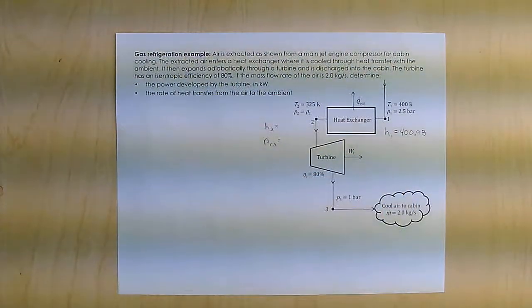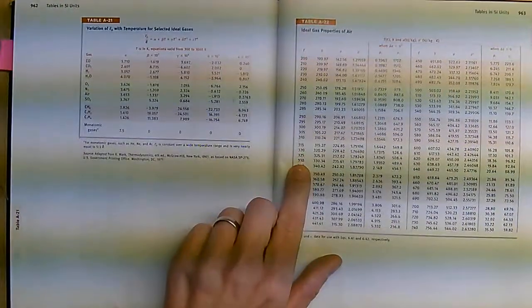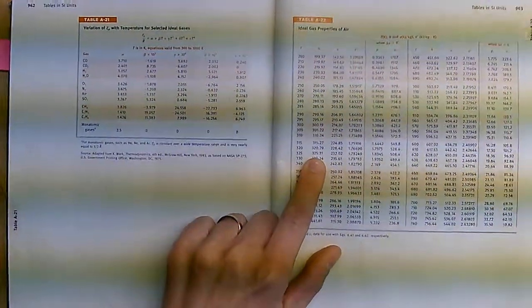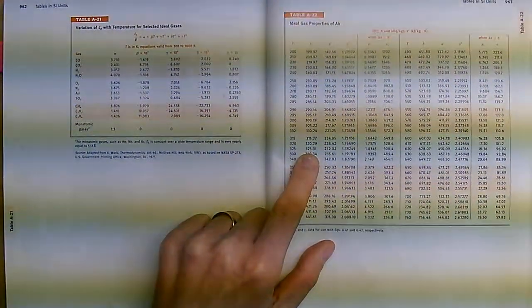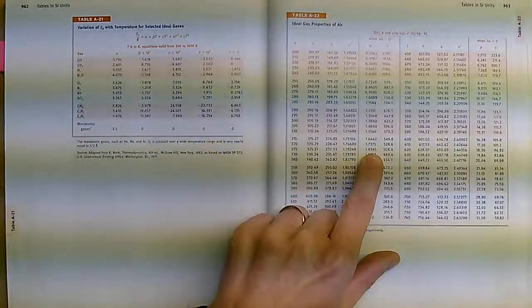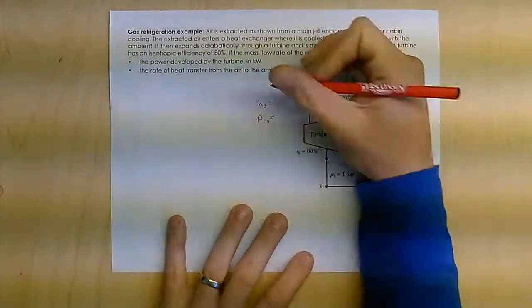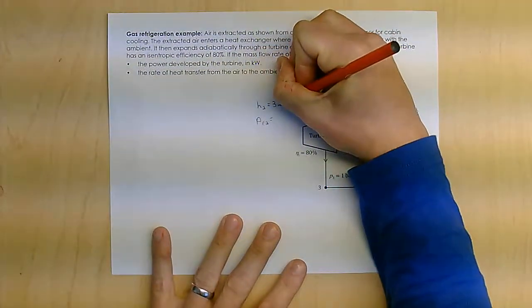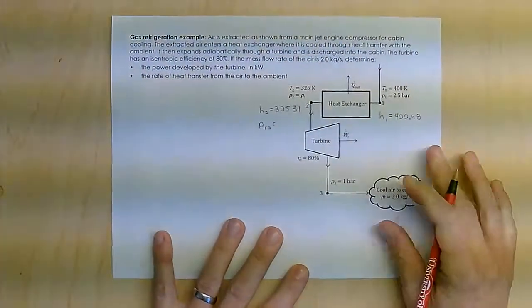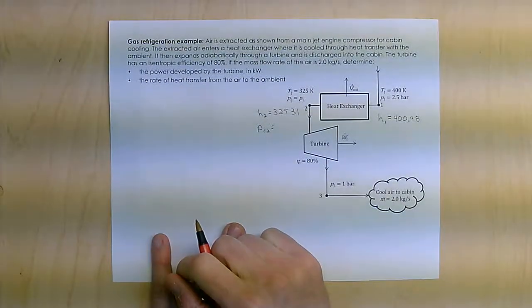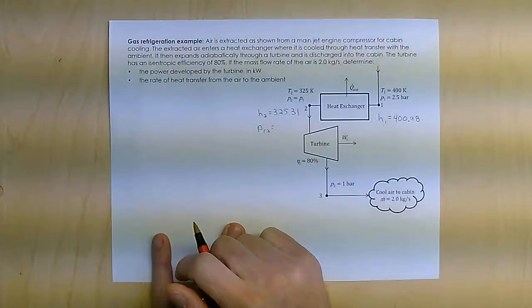So at H2, I'm at 3.25 is right here. H is 325.31, and PR is 1.8345. So this is 325.31. And then PR2 is 1.8345.